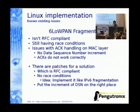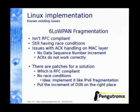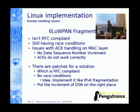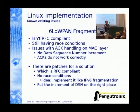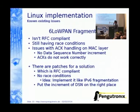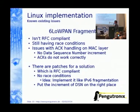There are also known existing issues. 6LoWPAN fragmentation is currently mainline but not RFC-compliant and still has this race condition — it's like Russian roulette while you use fragmentation. There are also some issues with the acknowledgement handling in the MAC layer. But I have patches for this which are RFC-compliant and have no more race conditions. I hope to remove these issues because the current Linux has an IPv6 fragmentation API, and the current implementation doesn't use it.